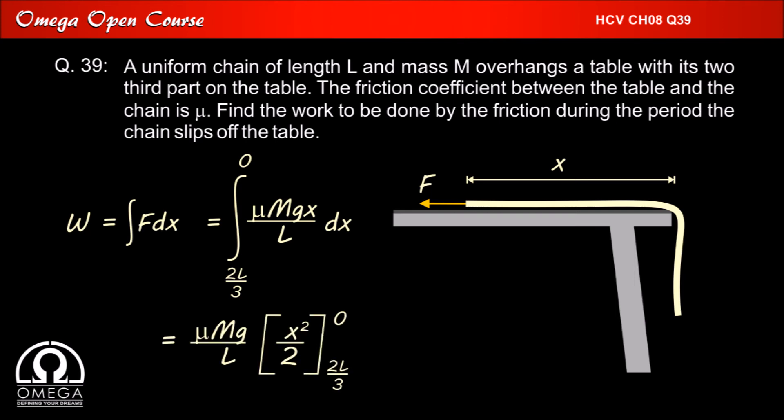Integrating we get work is equal to mu Mg by L into x square by 2. Putting the limits this becomes minus 2 mu Mg L by 9. This is our answer.